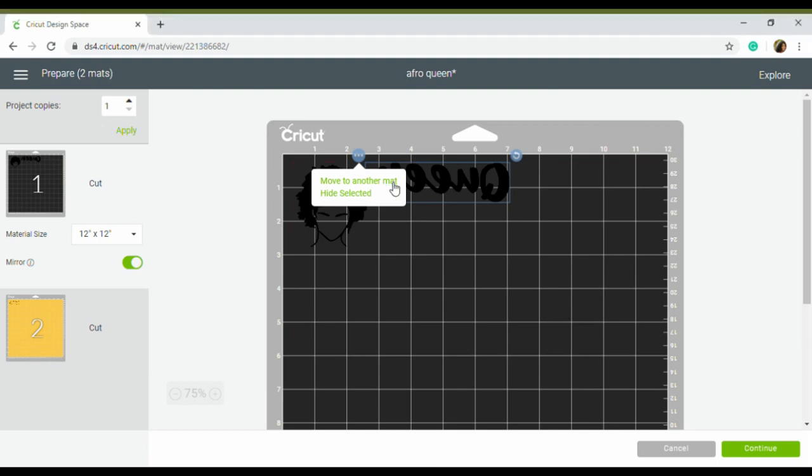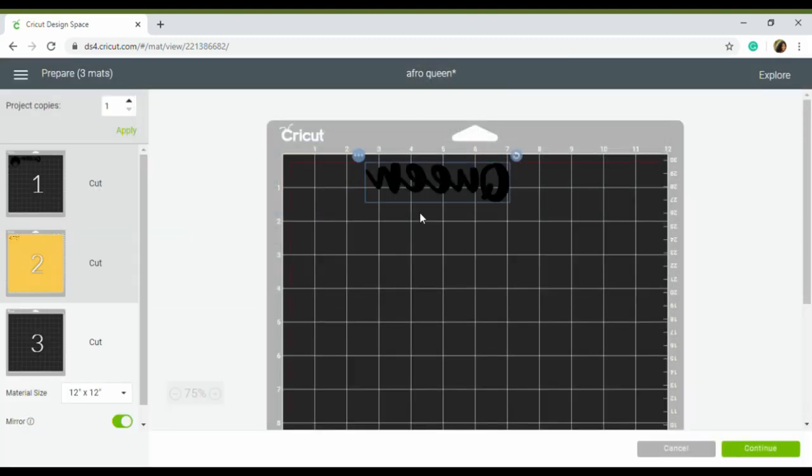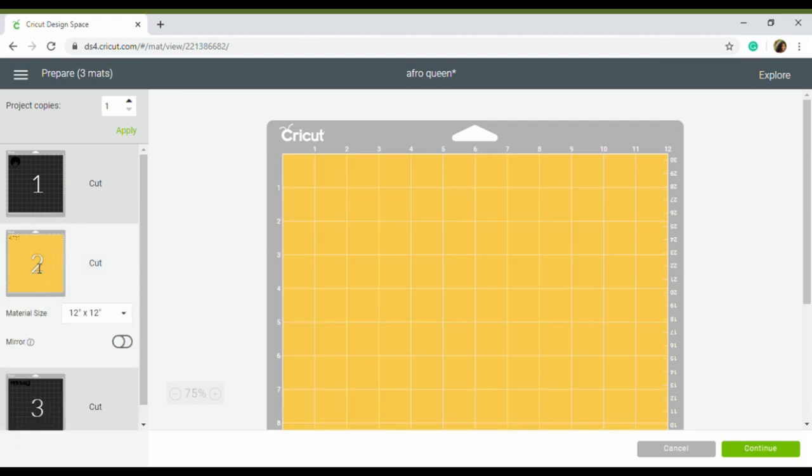Okay, so after you click the link to the project, you want to go ahead and press make it. Then after you press make it, you want to go ahead and mirror your images because we will be using iron-on vinyl. And so after you mirror all of your images, you want to go to your mats and arrange them so nothing is overlapping and everything will have enough space to cut out.